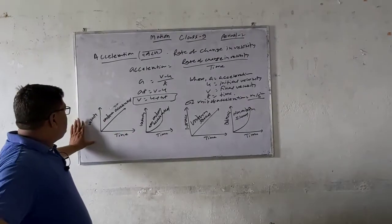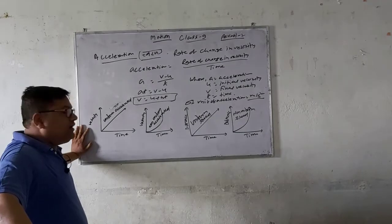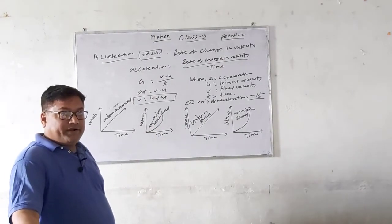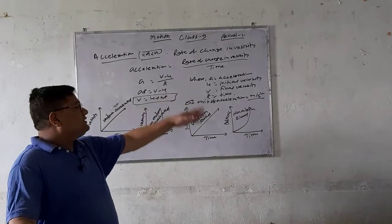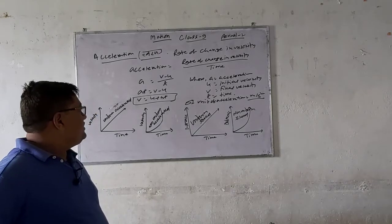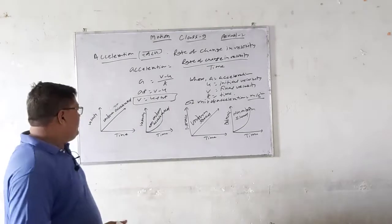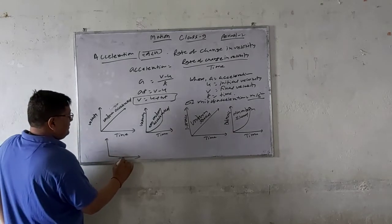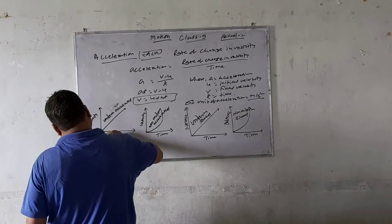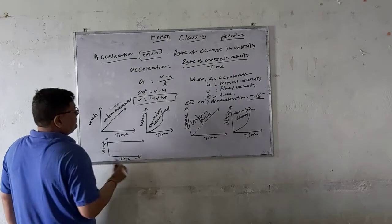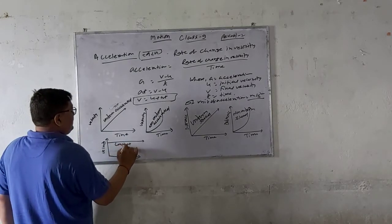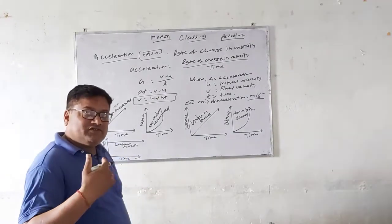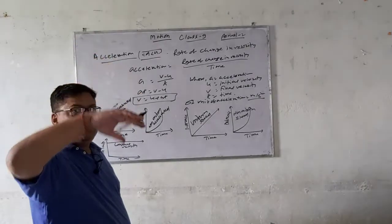On the velocity-time graph: if the line is straight, that is uniform accelerated motion; if the line is curved, that is called non-uniform accelerated motion. On the distance-time graph: if the line is straight, that is uniform speed. Now if we take a velocity-time graph where time is on the x-axis and velocity is on the y-axis and the line is drawn straight and horizontal, that means constant velocity — the object is moving continuously at the same speed with no change in velocity over time.